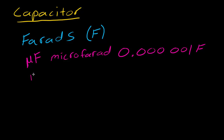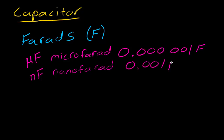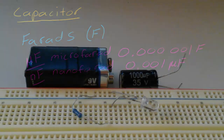We may also use nanofarads (nF). A nanofarad is even smaller — it is one thousandth of a microfarad, so it is extremely small. These are the two units of Farads we'll be using, because a full Farad is a very large value for the electronics work we'll be doing.